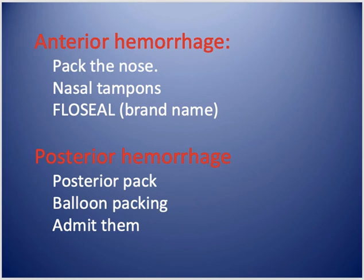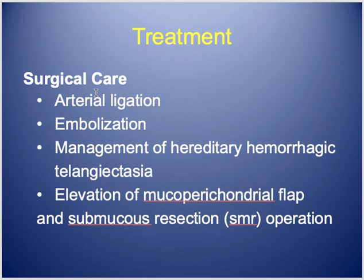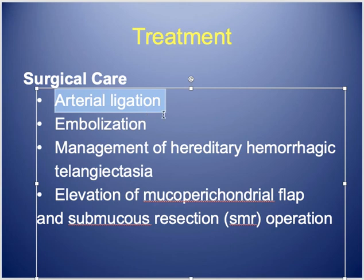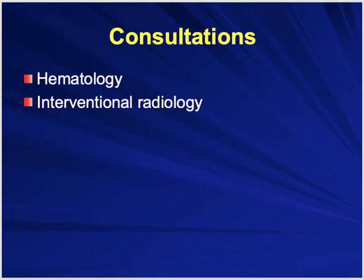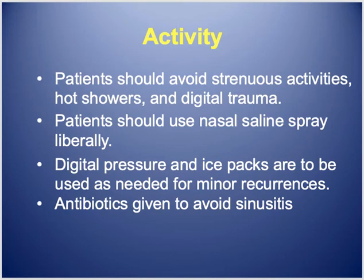If packing fails, the next level is surgical ligation of the arteries or embolization to block the blood supply. A submucous resection operation may also be performed. A hematologist and interventional radiologist are involved at this stage. For prevention, advise patients to use a humidifier, saline spray, avoid irritants, and treat hypertension and coagulopathies.